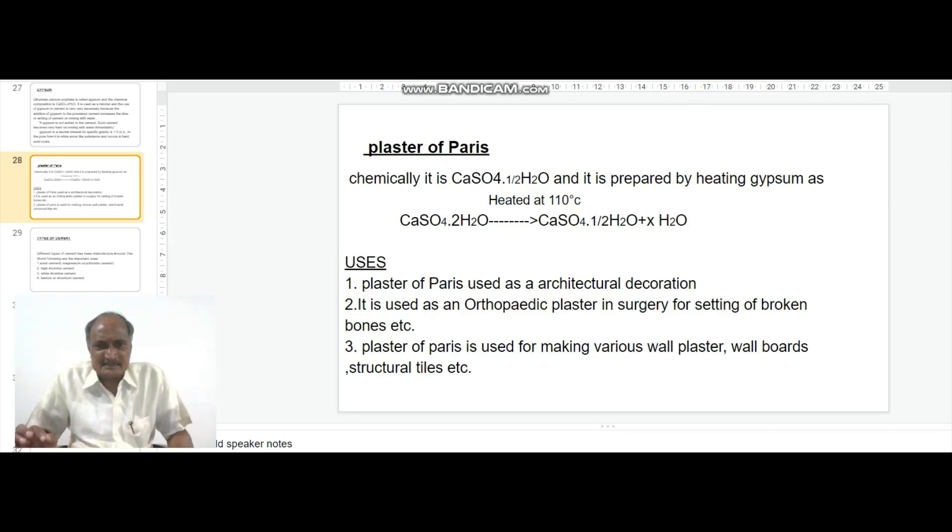The next important factor in the cement industry is plaster of Paris. Chemically, plaster of Paris has the chemical composition CaSO4·½H2O.